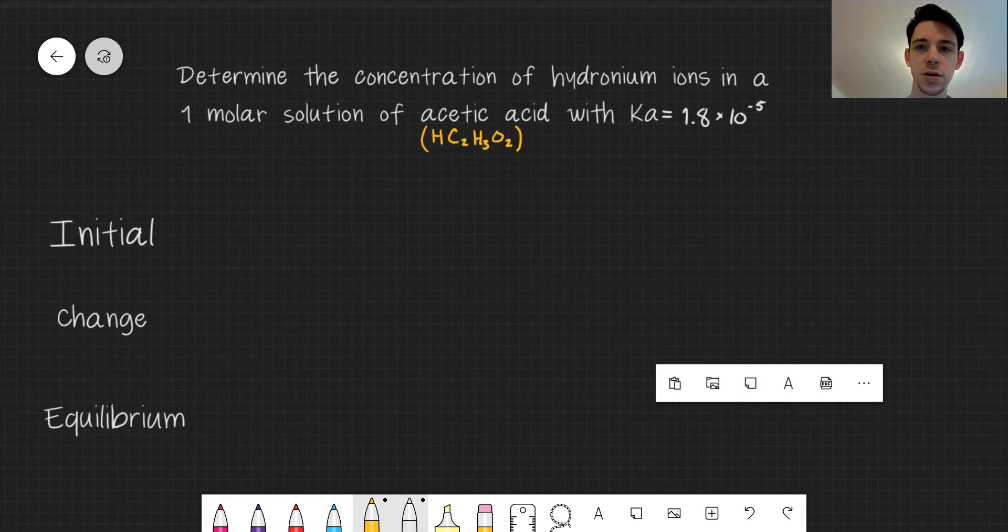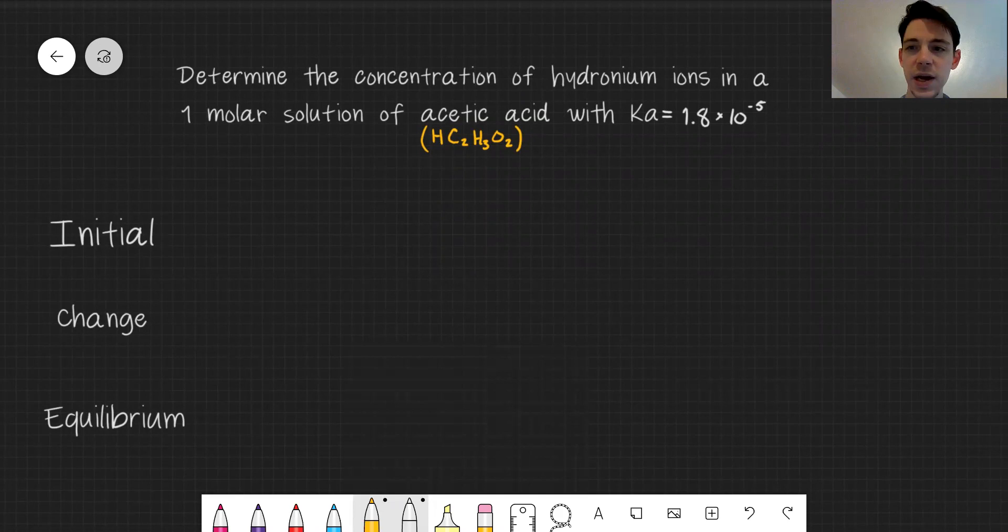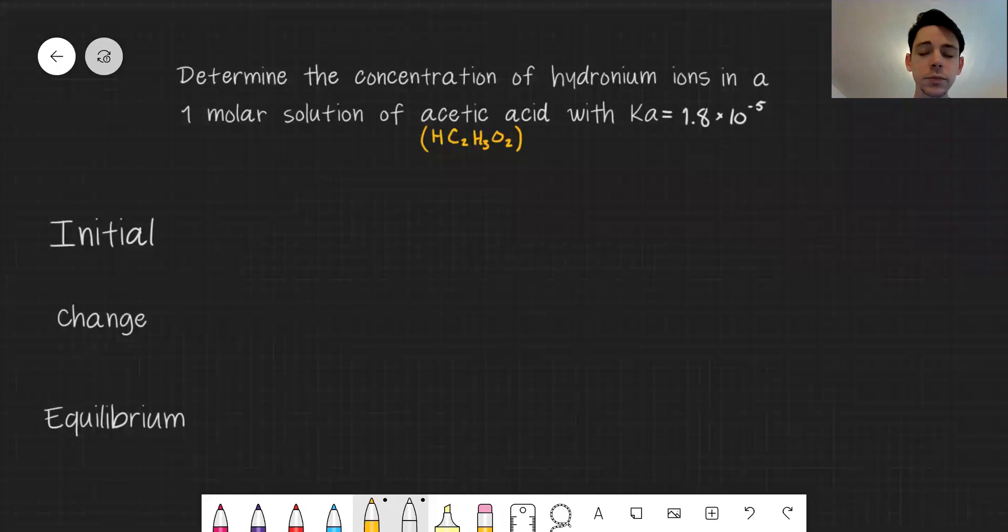We're going to try to determine the concentration of hydronium ions in a one molar solution of acetic acid with the Ka value given as 1.8 times 10 to the minus 5. The Ka value for any acid can pretty easily be found online and they're different for each different acid.